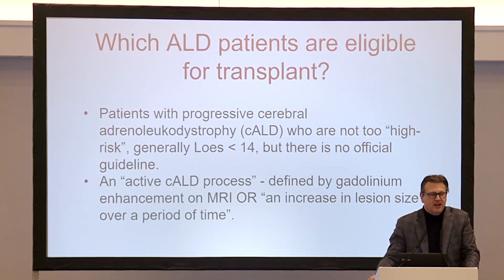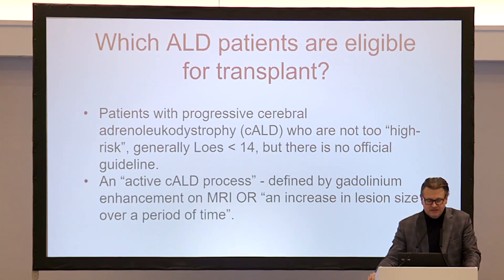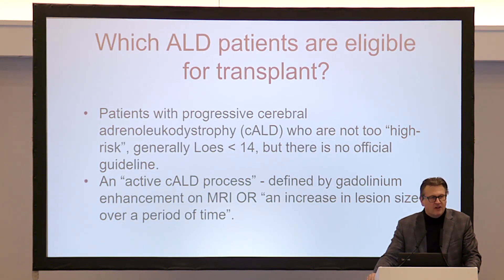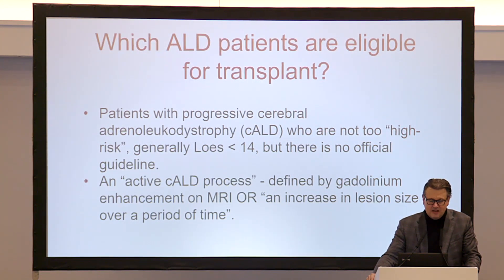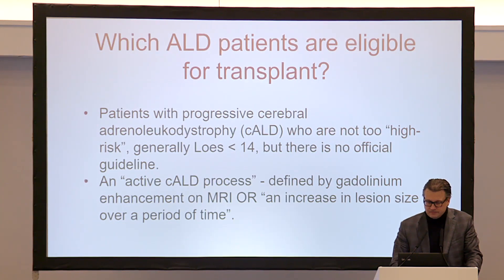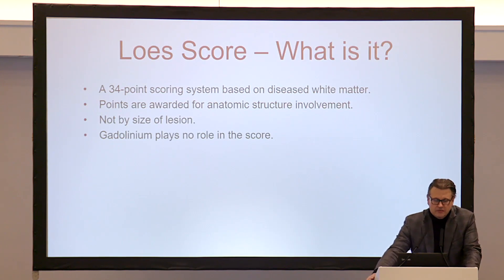First of all, which ALD patients are eligible for transplant? There are two biggest criteria: patients with progressive cerebral ALD who are not too high risk — we'll define that in a bit. Generally we think about it in terms of a Loes score less than 14 if people really need a number to go by, but it's very individualized; there's no official guideline. Patients also need to have an active cerebral ALD process, defined by gadolinium enhancement on MRI, or an increase in lesion size over time. You can be gadolinium negative, but if your lesion is growing over months, that would also be criteria to go to transplant.